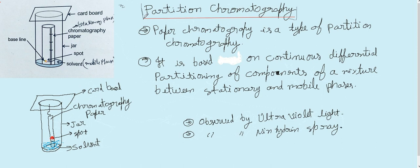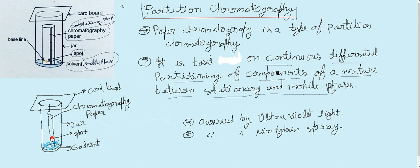In partition chromatography, the partition of the mixture takes place between the solvent and the chromatography paper. The chromatography paper is called the stationary phase. It is based on the continuous differential partition of components of the mixture between the stationary and mobile phase. Paper chromatography is also a type of partition chromatography.